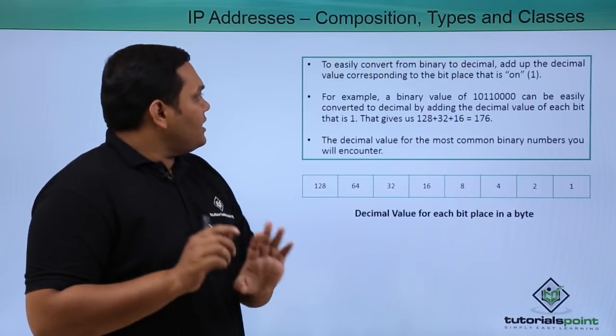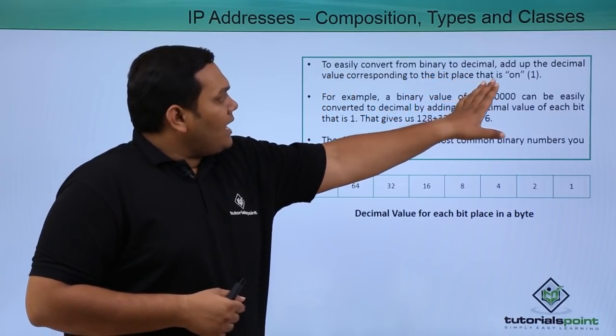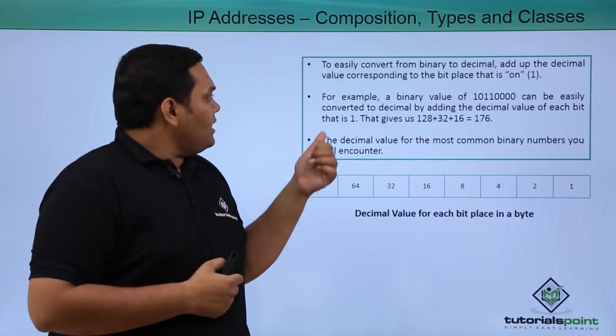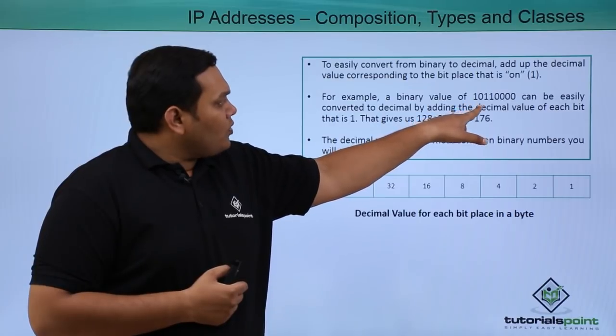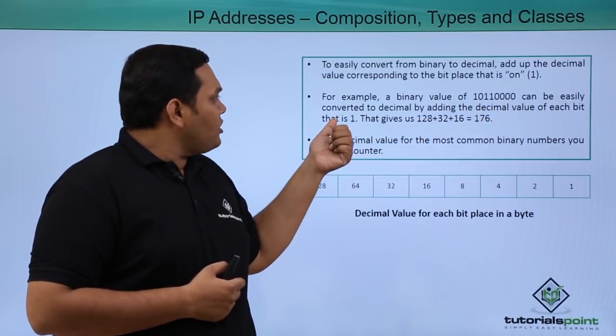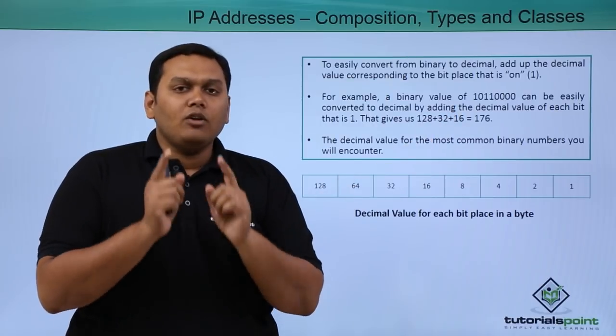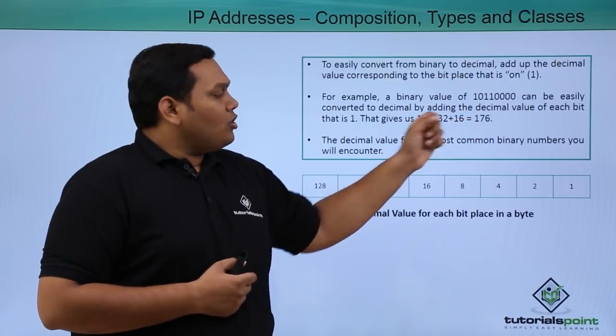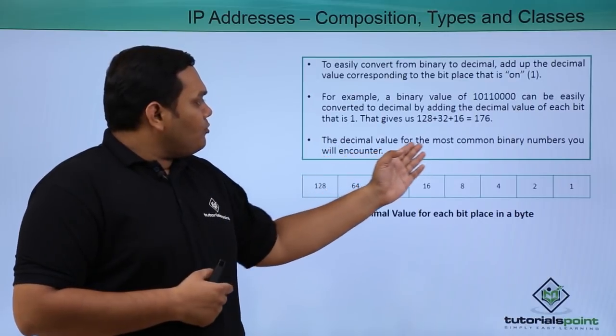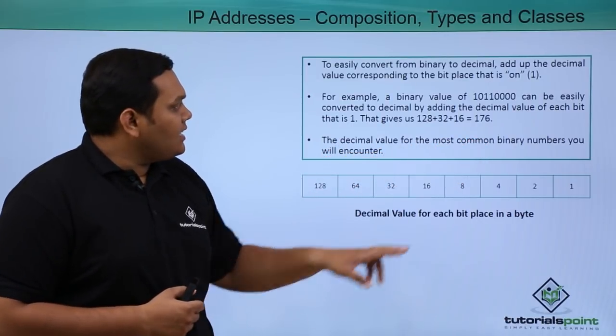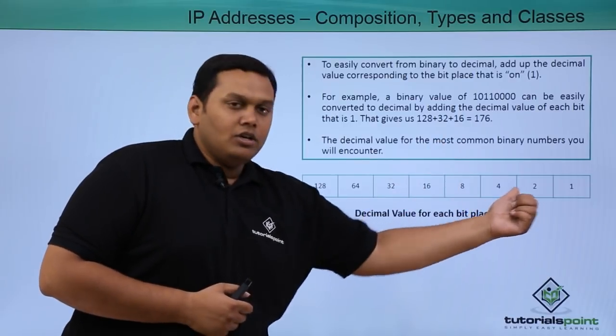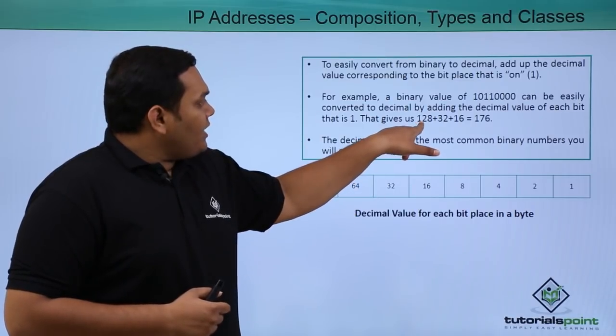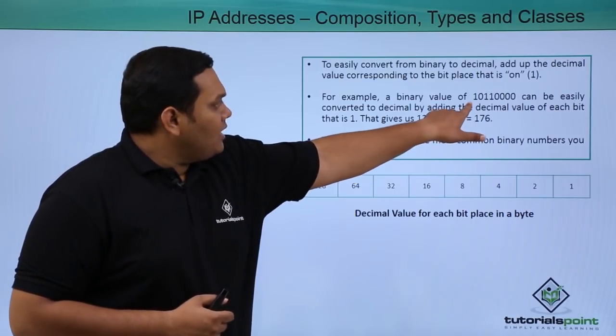How is this converted? You can easily see here it is converted from binary to decimal by adding up the decimal values corresponding to the bit place which has a 1. Take an example: 10110000 can be easily converted to decimal by adding the decimal value where 1 is noted. That gives 128 plus 32 plus 16, which equals 176.